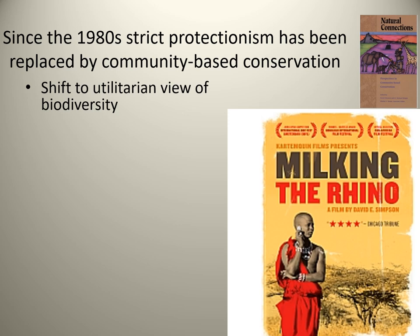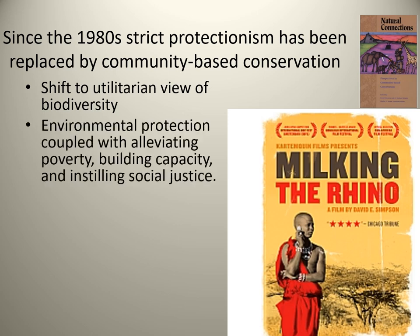Community-based conservation reflects a shift to the utilitarian view of biodiversity: conserving it not just for nature's sake but because we need it, rely on it, and live within it. Environmental protection under this approach is coupled with social justice, alleviating poverty, and building local capacity. You cannot achieve environmental justice and sustainability without also achieving social justice.